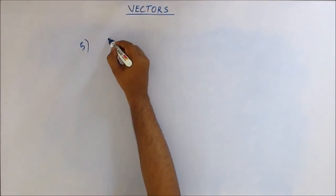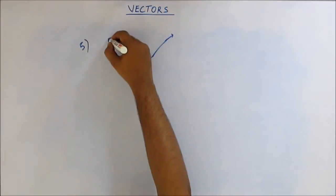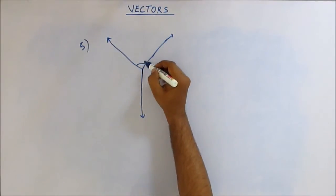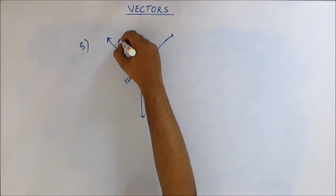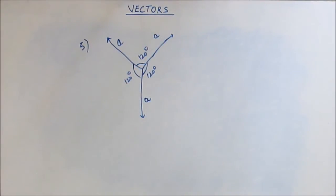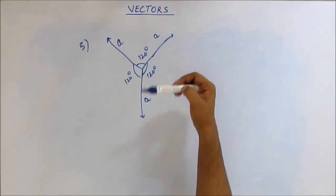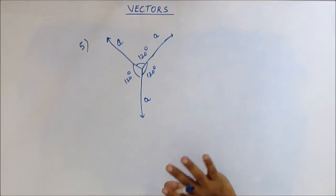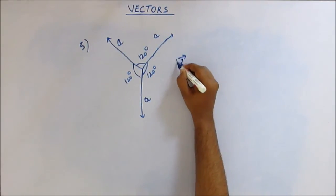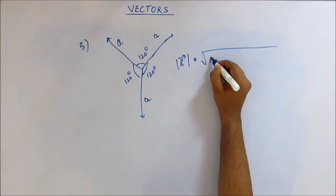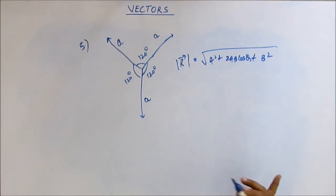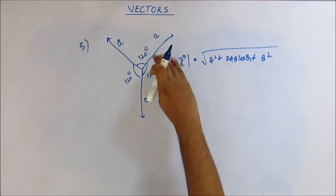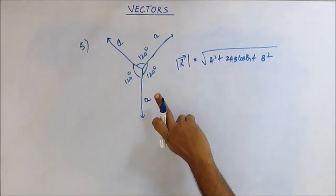Assuming you have solved it as a good student — let us now go through it. We have a vector A, vector A, and vector A. We have two basic formulas for vectors. The formula for the magnitude of the resultant vector is √(a² + 2ab·cosθ + b²). Here a and b are the magnitudes of the vectors and θ is the angle between them. Both vectors have magnitude a and the angle between them is clearly 120 degrees. So we get √(a² + 2a²·cos120°), and cos120° = −½.